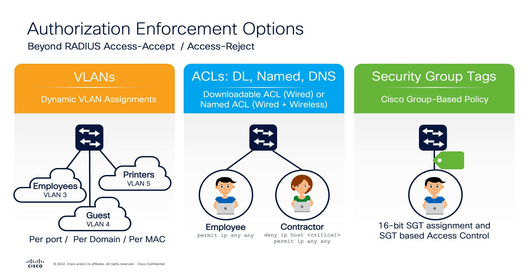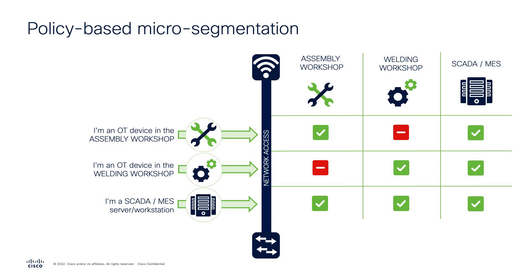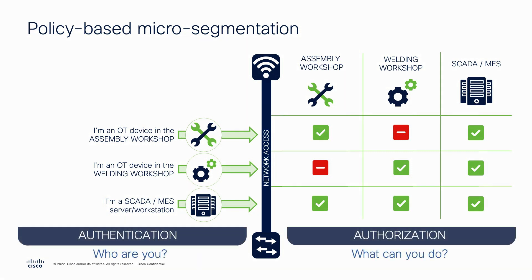One key option is the ability to leverage security group tags, which allows abstracting away from IP addresses and defining policies based on the types of devices and the context about them. When leveraged in an industrial environment, security group tags give the ability to define access based on device information and where devices are located inside the facility. For example, an OT device in the assembly workshop can talk to other assembly workshop devices, but not to welding workshop devices. This also enables security policies in brownfield environments where IP addresses have already been set and changing them is difficult.